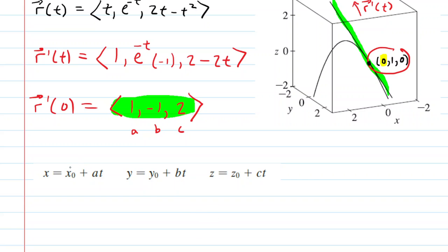There we have it. Now, this x0, y0, and z0 are simply the coordinates of our point here. So our x0 will be 0. Our y0 is 1. And our z0 is also 0. And then, again, the a, b, and c are the direction numbers for our tangent line. We've gotten those earlier from the tangent vector. So let's plug everything in.